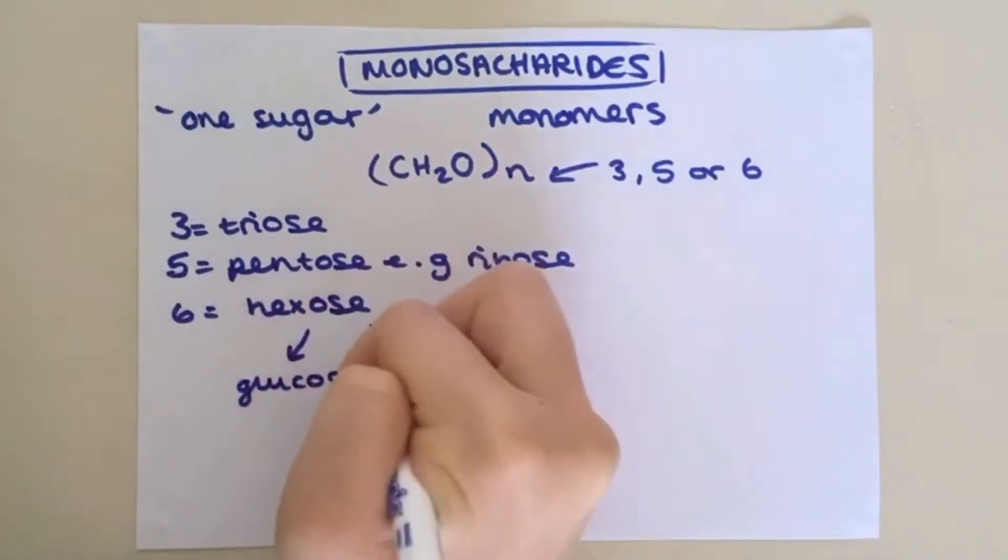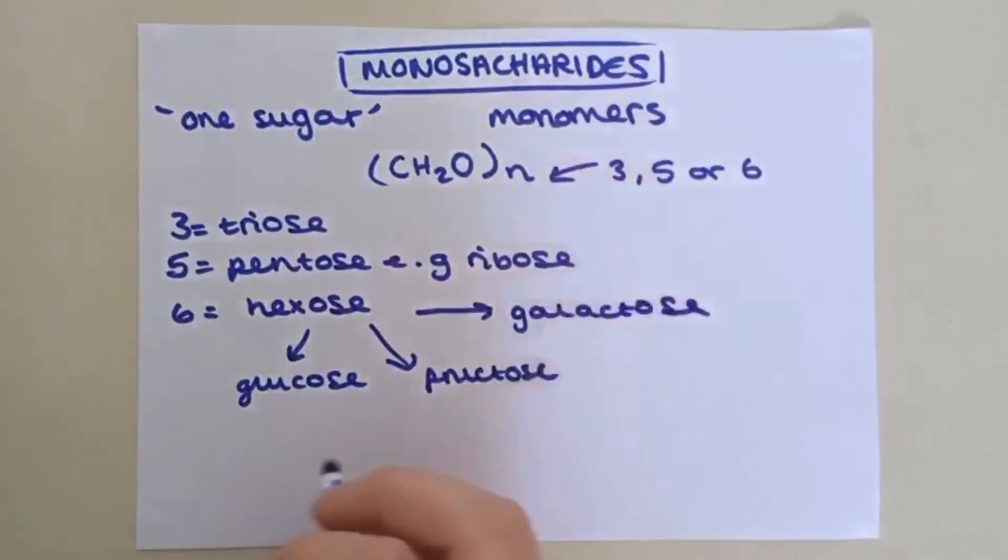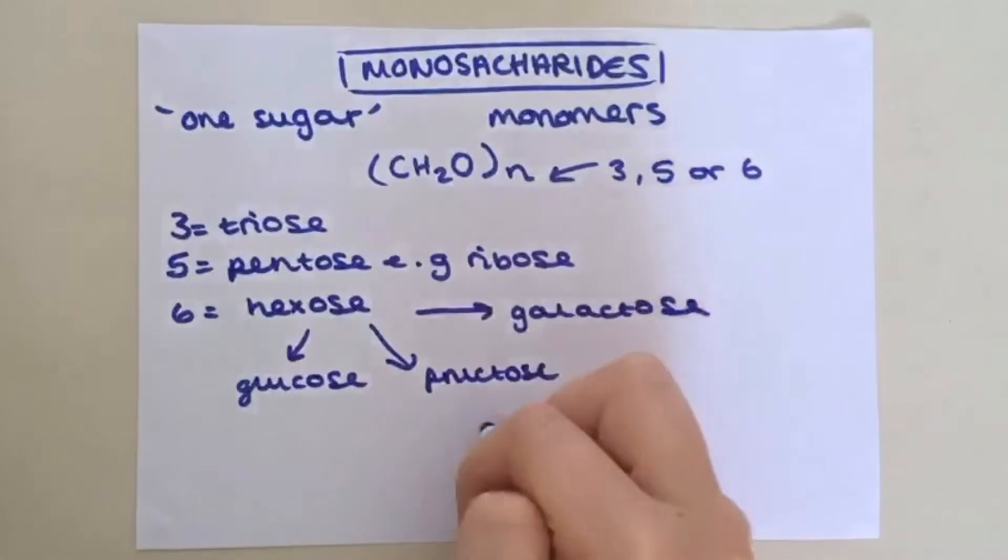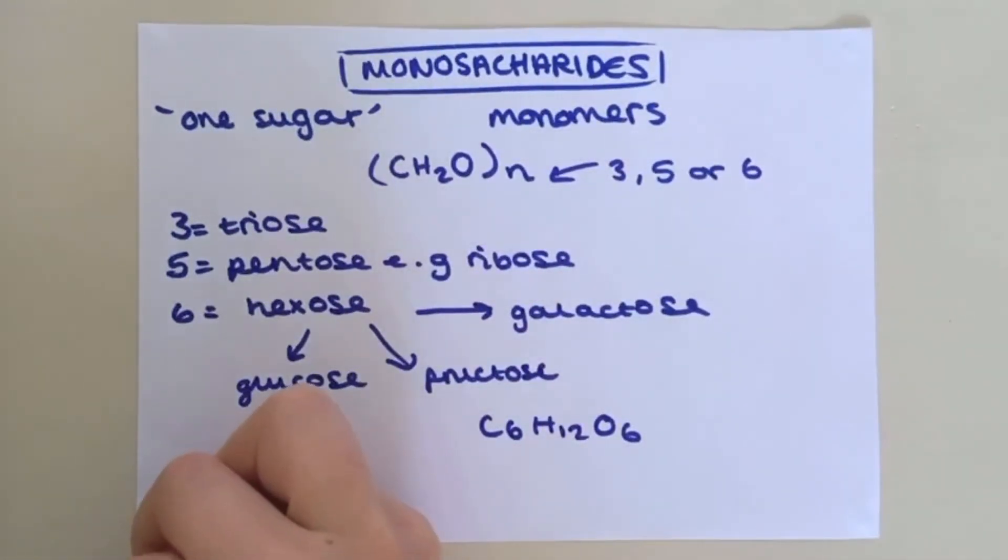The three main hexoses are glucose, fructose and galactose, all of which have the chemical formula C6H12O6. You do not need to be able to draw the structure of fructose or galactose, but you will need to recognize and know how to draw the two isomers of glucose, known as alpha-glucose and beta-glucose.